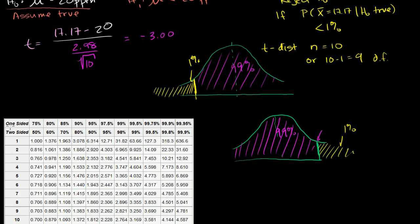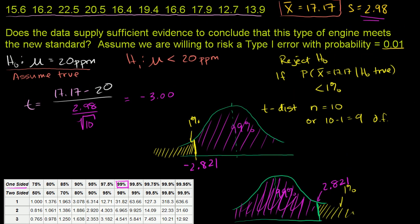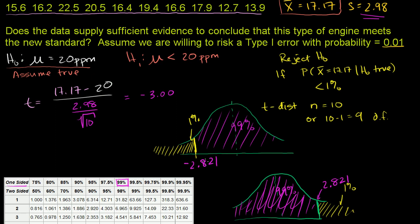Looking at the t-table for a one-sided cumulative distribution of 99% with 9 degrees of freedom, our threshold t-value is 2.821. Flipping this to the negative side by symmetry, our threshold becomes negative 2.821. So the probability of getting a t-value less than negative 2.821 is 1%.